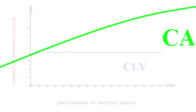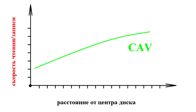And CAV — constant angular velocity. The rotation speed of the disc is kept constant, while the speed of data transmission does change.